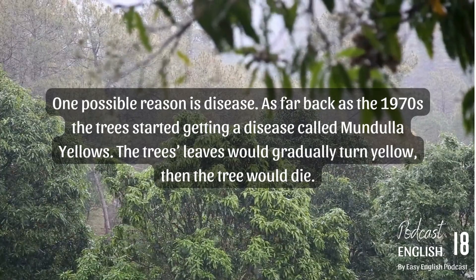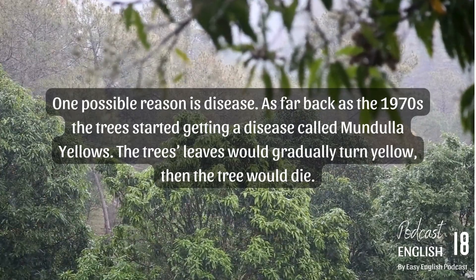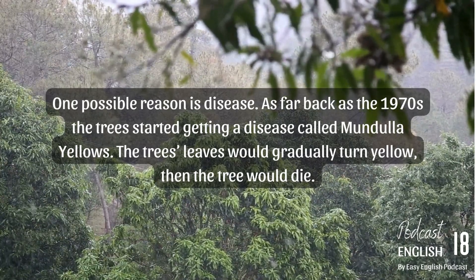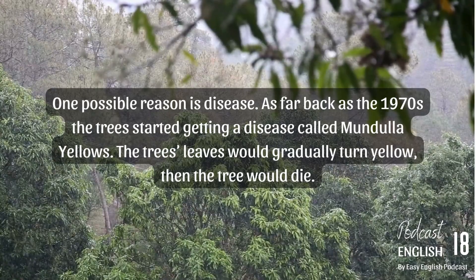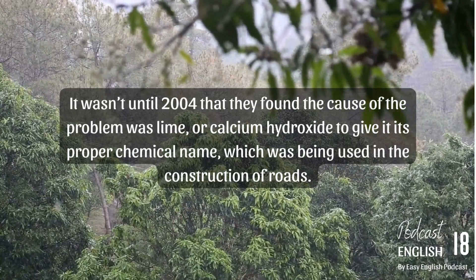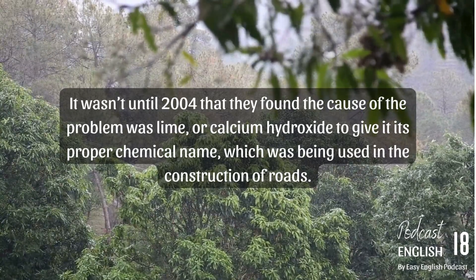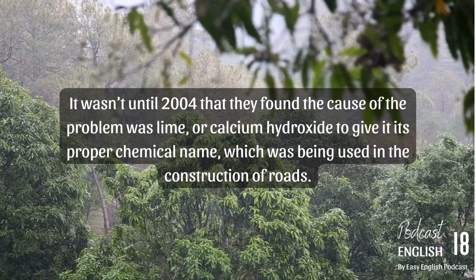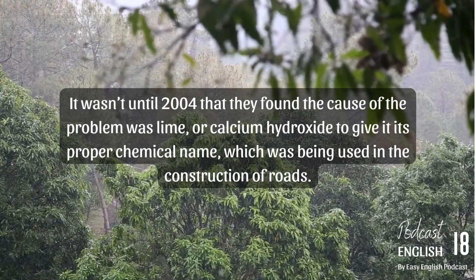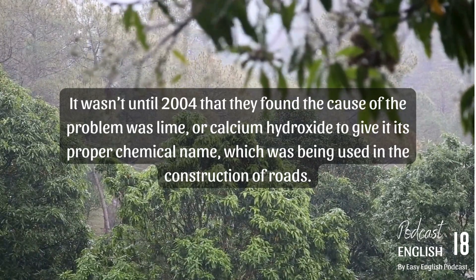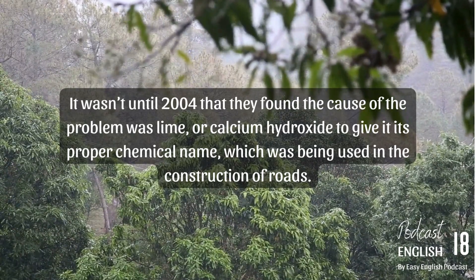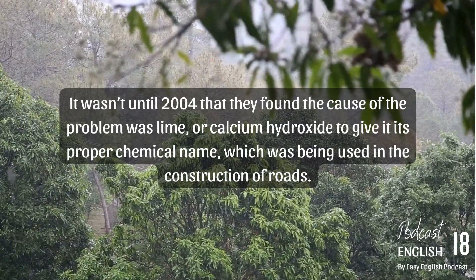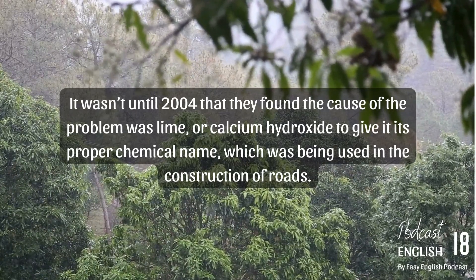The tree's leaves would gradually turn yellow, then the tree would die. It wasn't until 2004 that they found the cause of the problem was lime, or calcium hydroxide, to give it its proper chemical name, which was being used in the construction of roads.